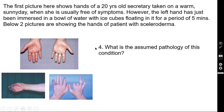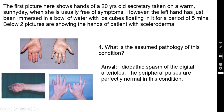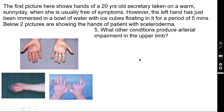Question four: what is the assumed pathology of this condition? The correct answer is idiopathic spasm of digital arterioles — that is the underlying pathology. The peripheral pulses are perfectly normal in this vasospastic condition.